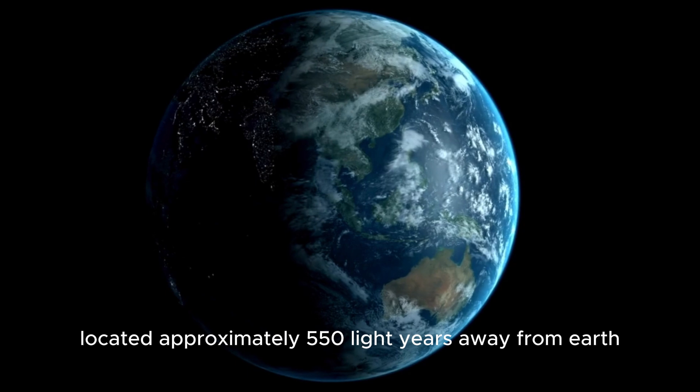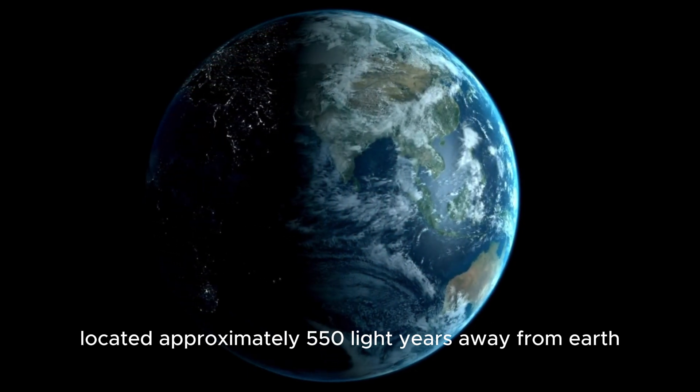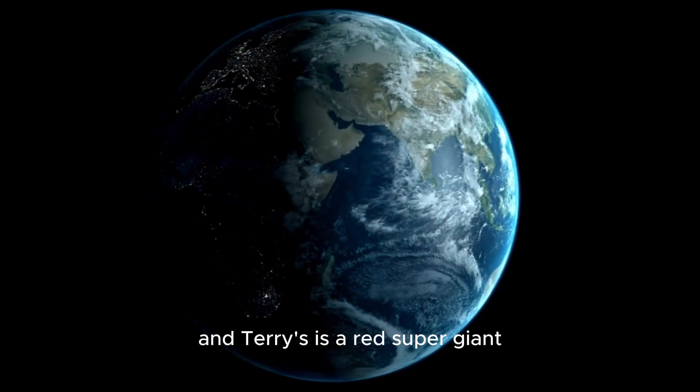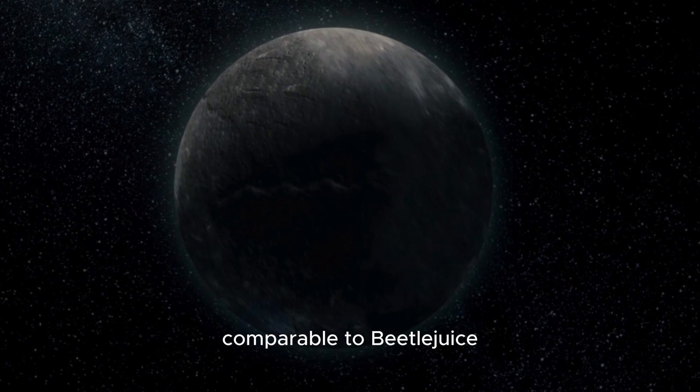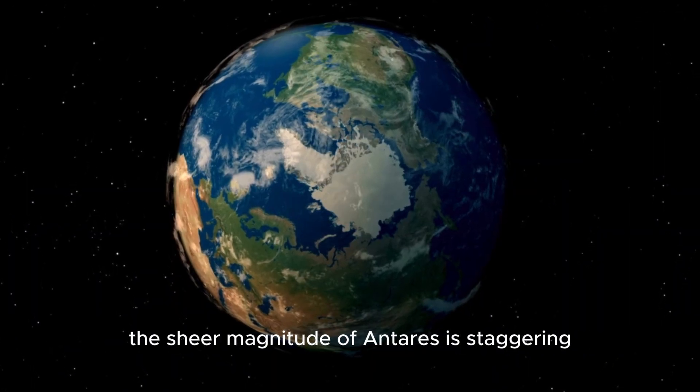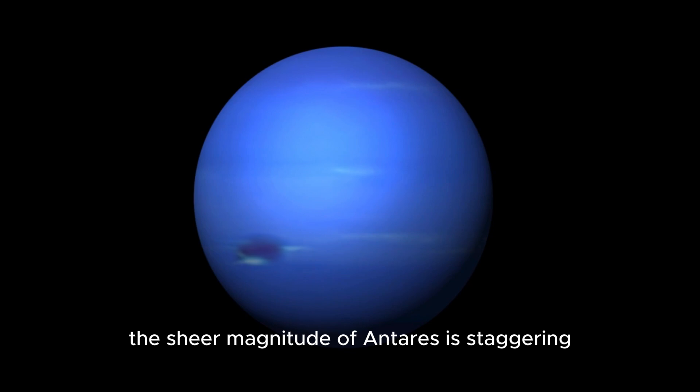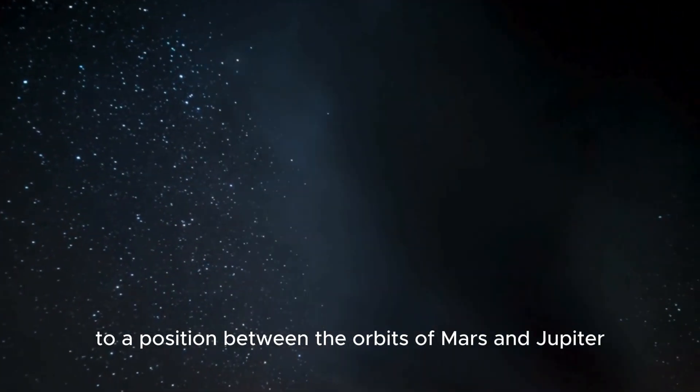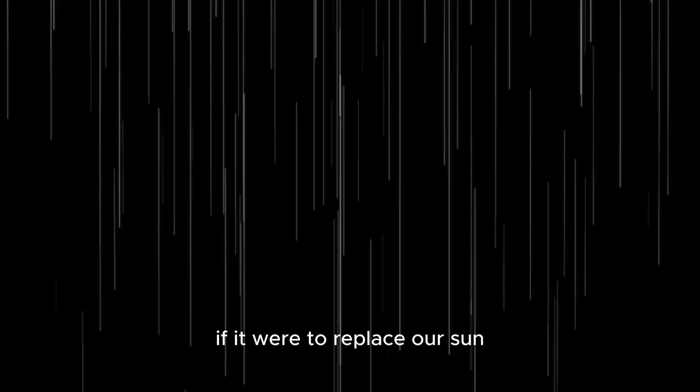Located approximately 550 light-years away from Earth, Antares is a red supergiant comparable to Betelgeuse, steadily approaching the end of its stellar journey. The sheer magnitude of Antares is staggering. Its size could stretch from the center of our solar system to a position between the orbits of Mars and Jupiter if it were to replace our Sun.